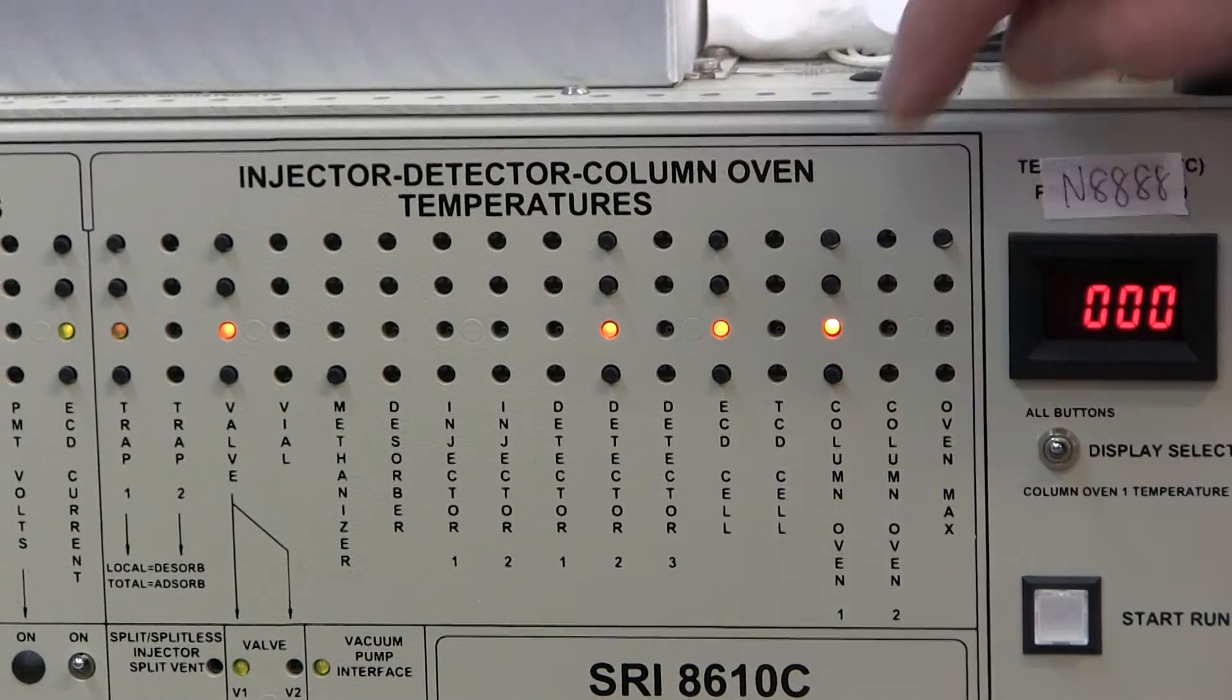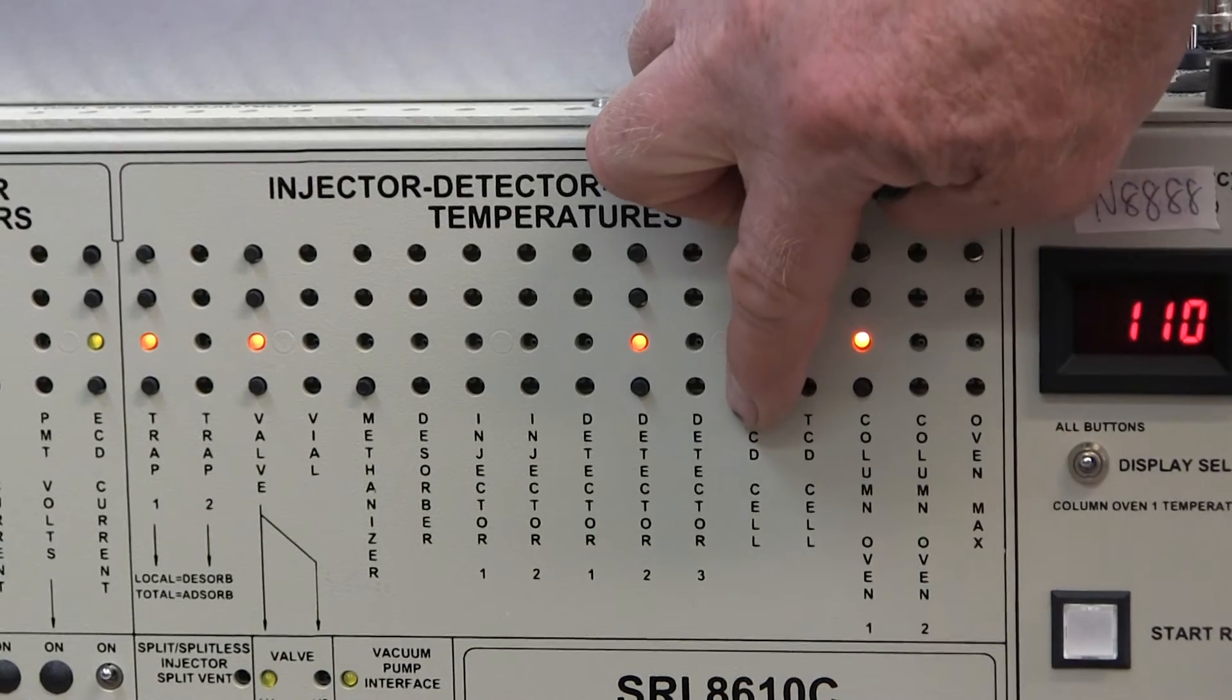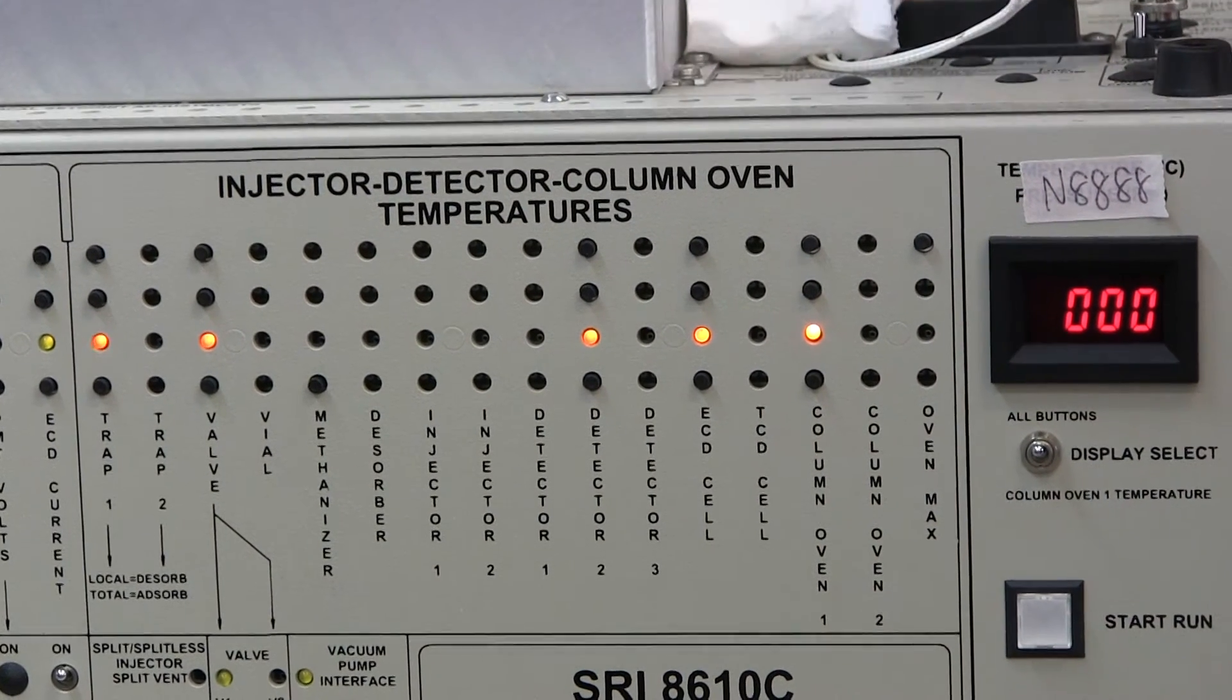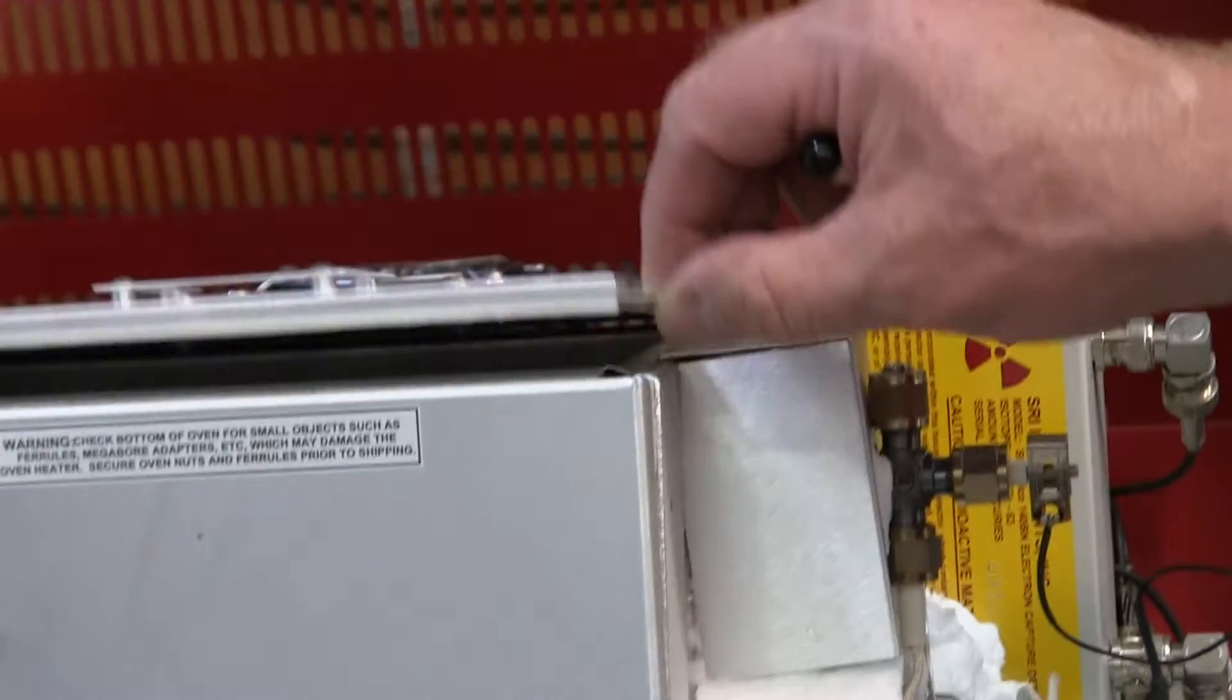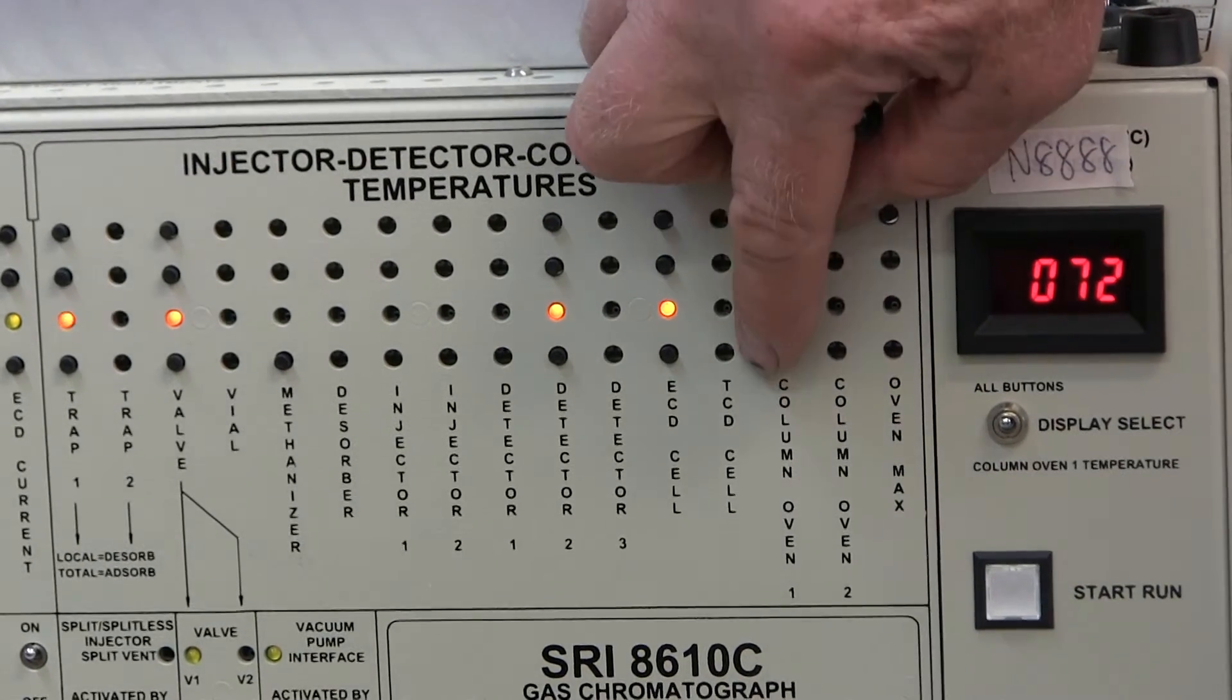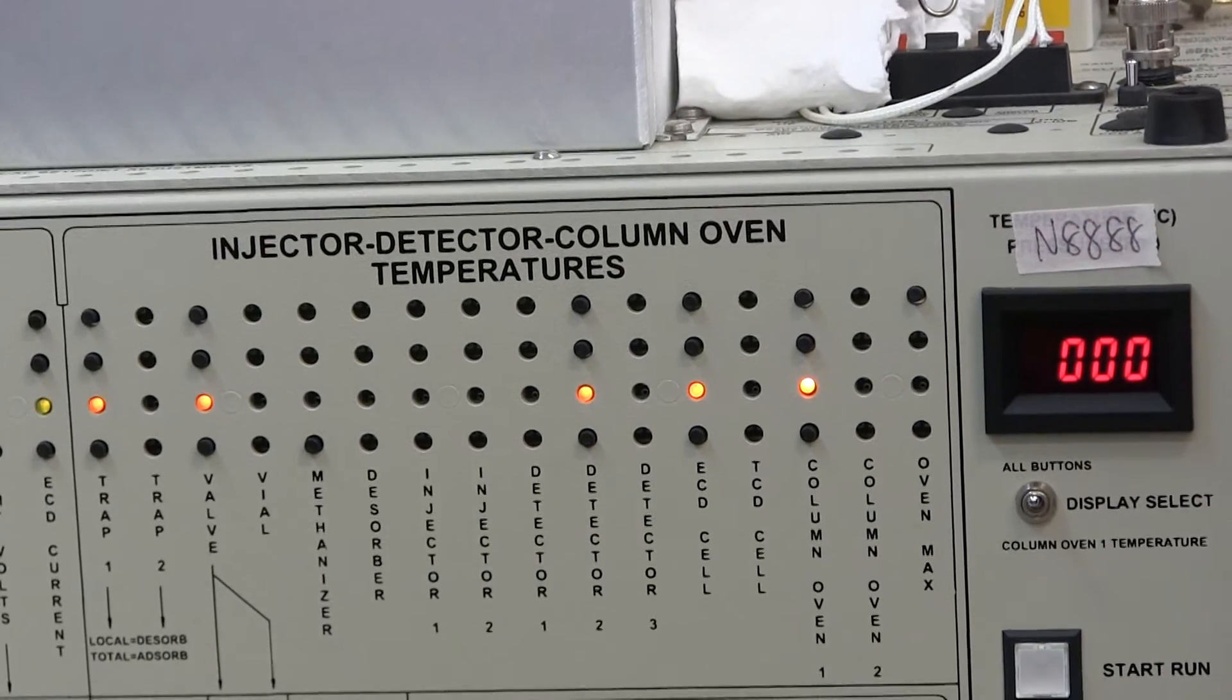The electron capture detector set point temperature is 252, the actual temperature is 110. So it's also in the process of heating up. The column oven, where the column lives, the set point temperature is 100, the actual temperature is 62. So it's also in the process of heating up.